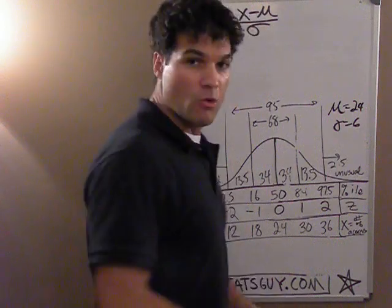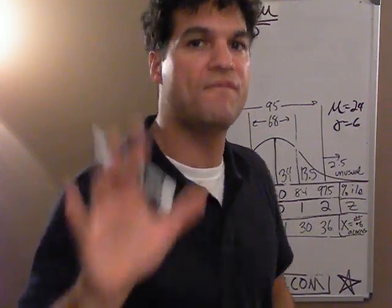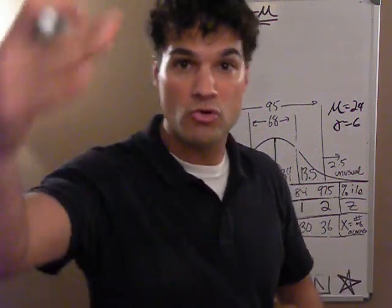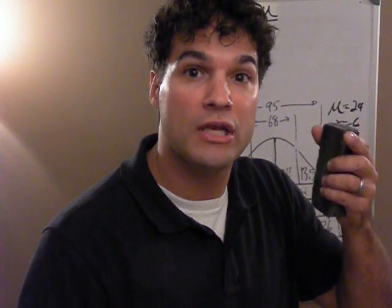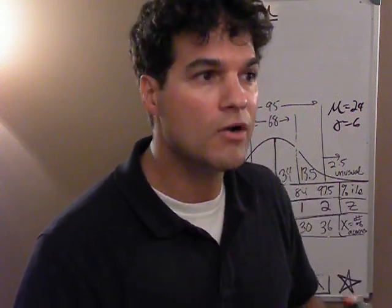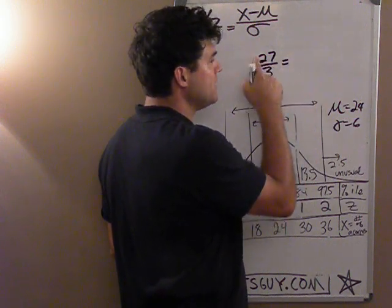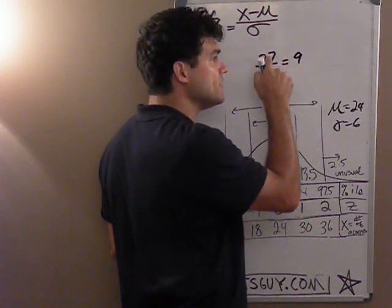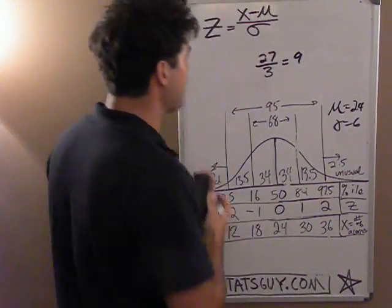When you divide by something, it tells you how many of those things something is. If you're 30 years old and you want to know how many fives old you are, take 30 and divide by 5 — you're 6 of those things. And if you divide by 2, it tells you you're 15 twos away. Suppose I have 27 and I'm curious how many threes that is — 27 divided by 3 is 9. So 27 is nine threes.